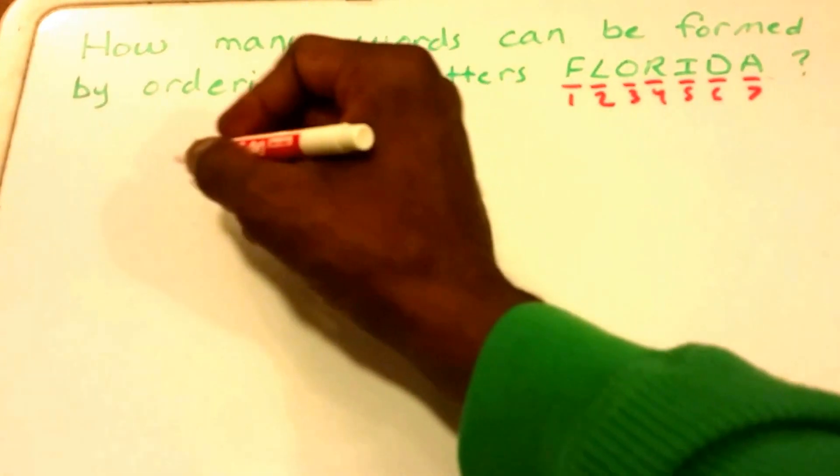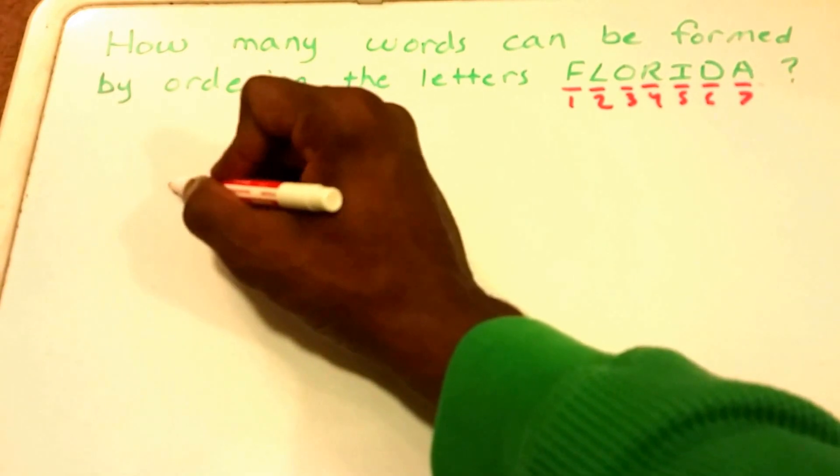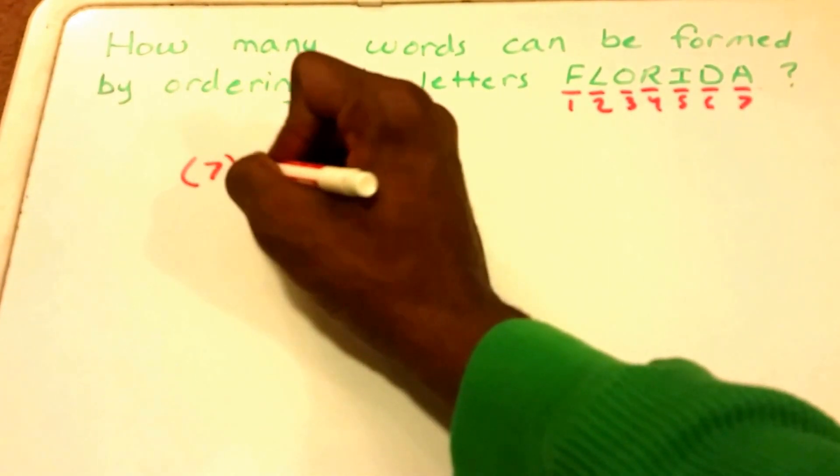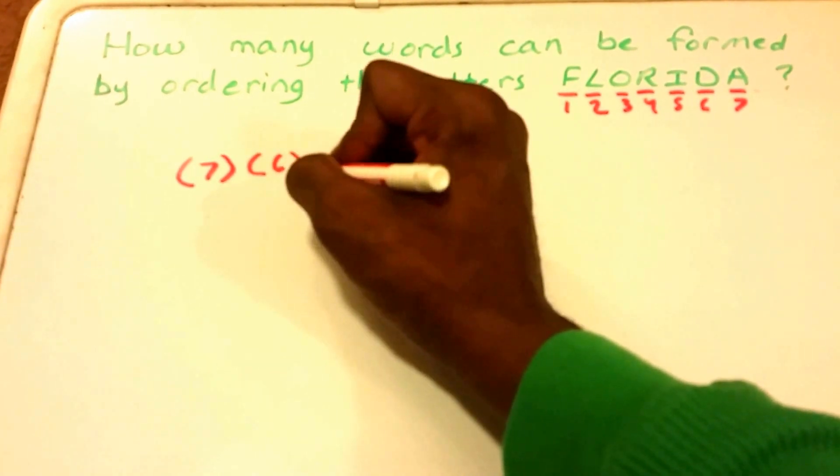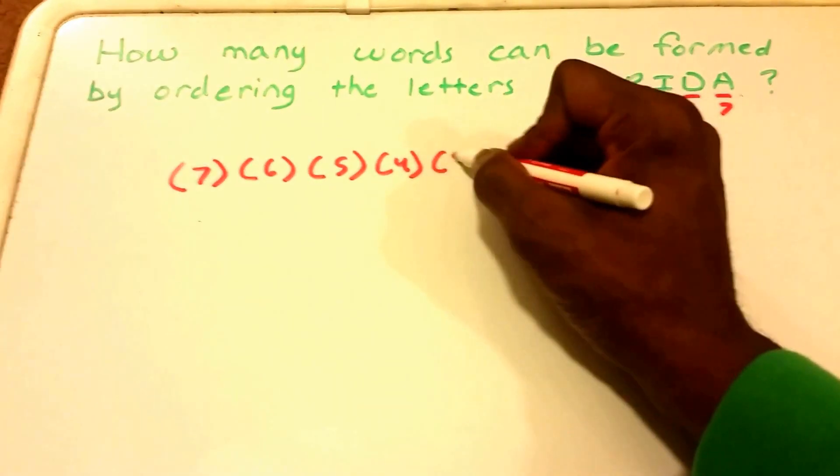What we have are seven places, so we get seven times six times five times four times three...